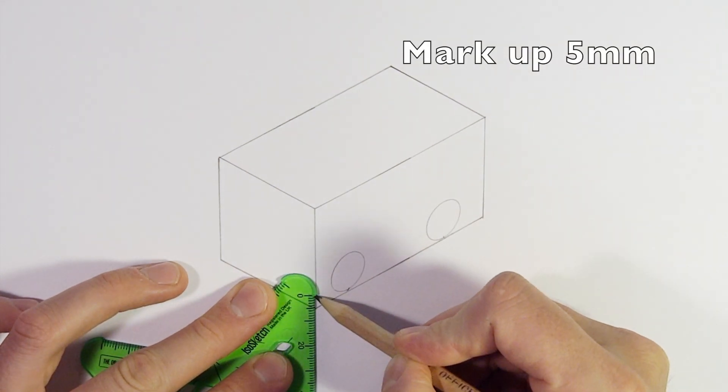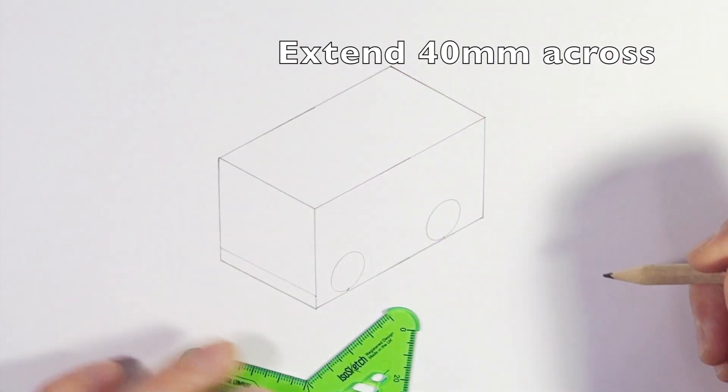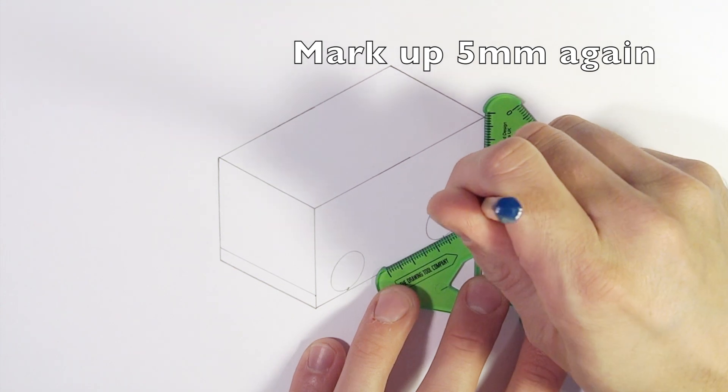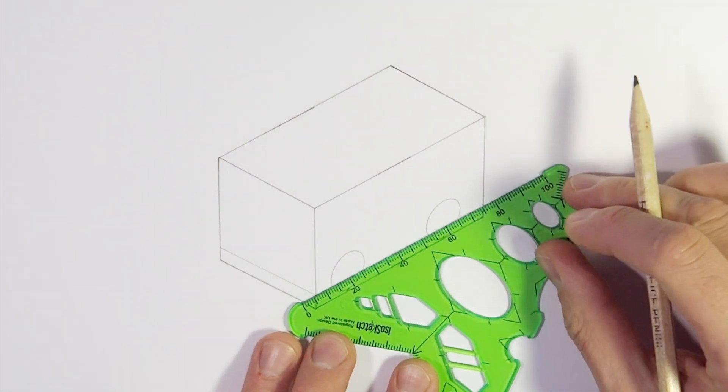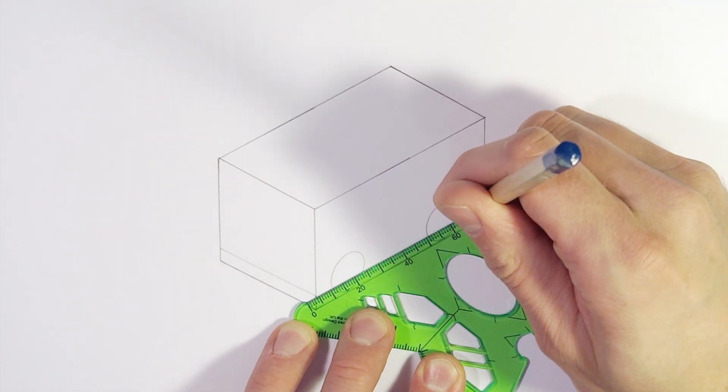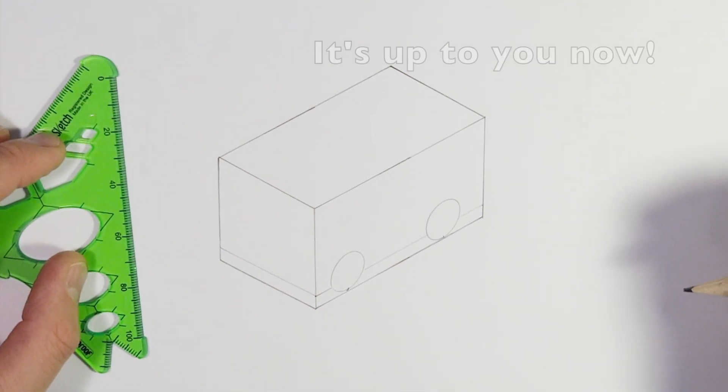The next thing we're going to do is mark on the bottom edge of our vehicle body. I've marked up 5mm and used the ISO sketch tool to draw a line across the shape. Really this is up to you. If you want your vehicle to sit really high off the ground then measure further up the shape, maybe a whole centimeter or two centimeters even.